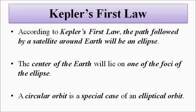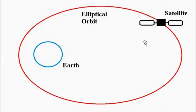Kepler's first law says that the path followed by a satellite around Earth, or around a planet, will be in the shape of an ellipse — an elliptical path. The path followed by a satellite around Earth or any other planet will be in the shape of an ellipse.